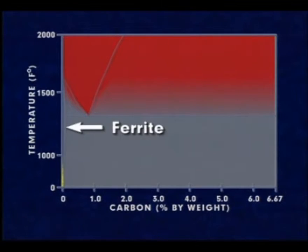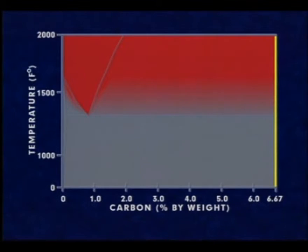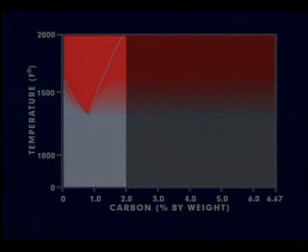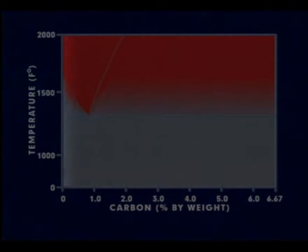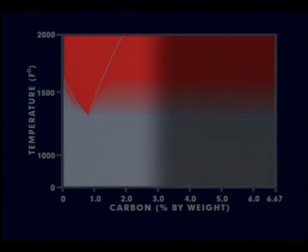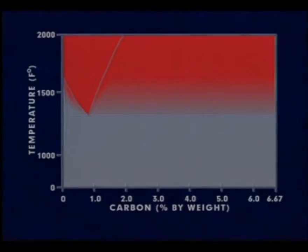Though this phase diagram ranges from ferrite, with very low carbon content, to cementite with 6.67% carbon, most steels contain less than 2.0% carbon. The carbon content is the major factor in determining the properties that can be developed in steel. The use of very low or very high carbon contents provides many different steel compositions with very different properties.